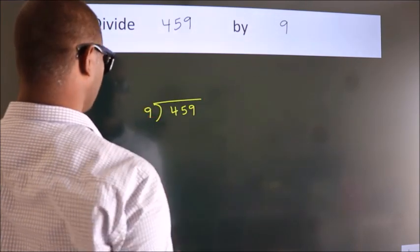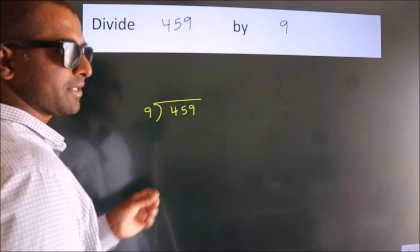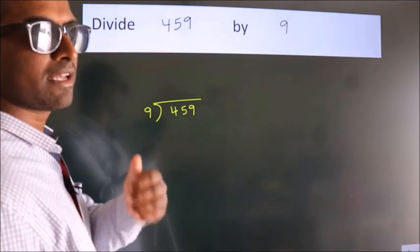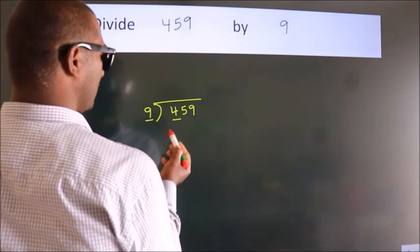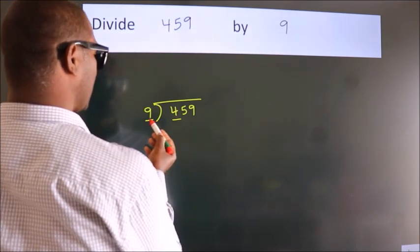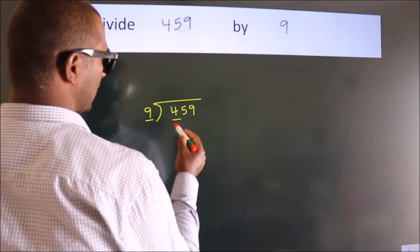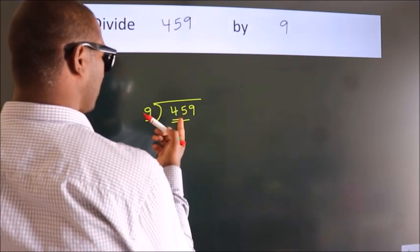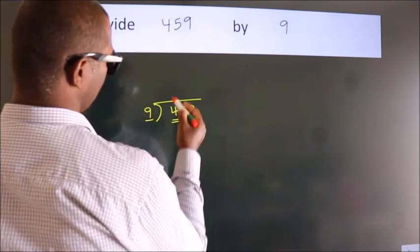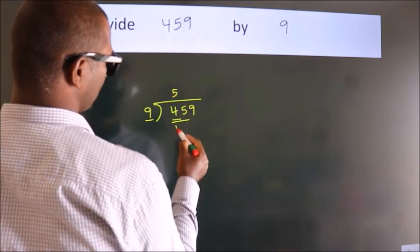9 here. This is your step one. Next, here we have 4, 4 is smaller than 9, so we should take two numbers: 45. When do we get 45 in the 9 table? 9 fives are 45.